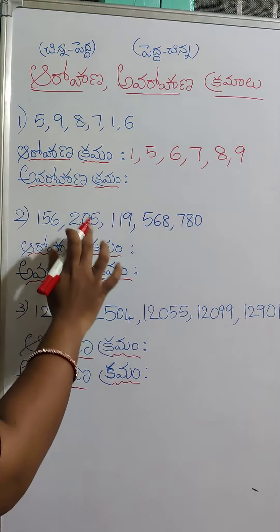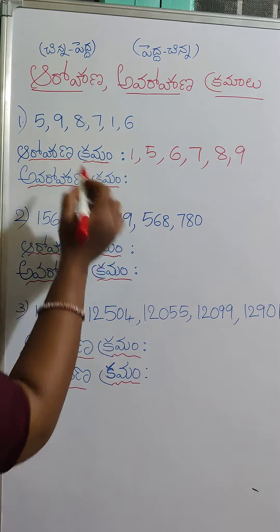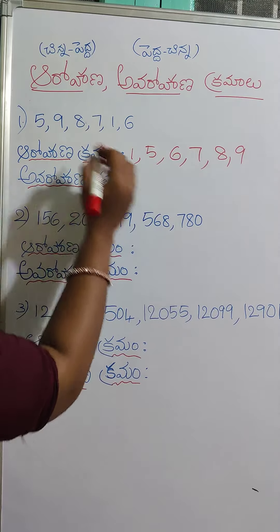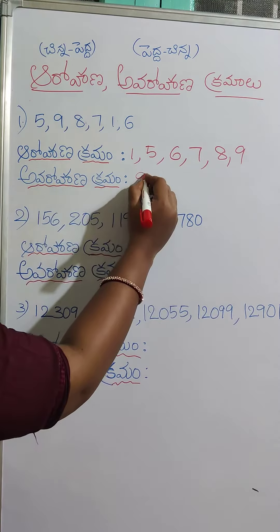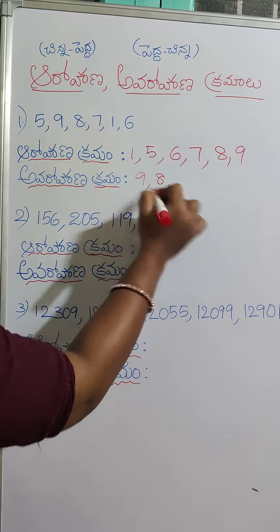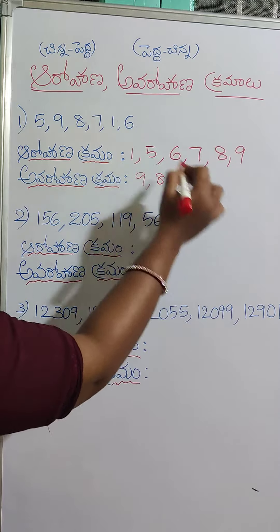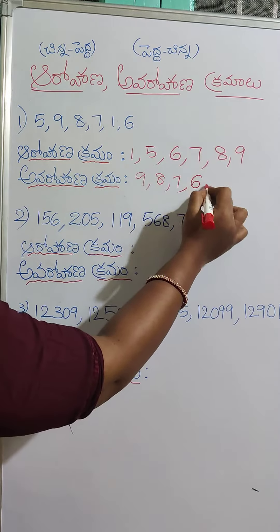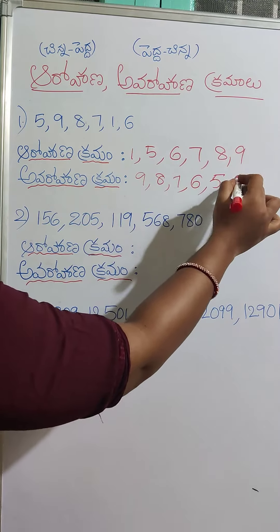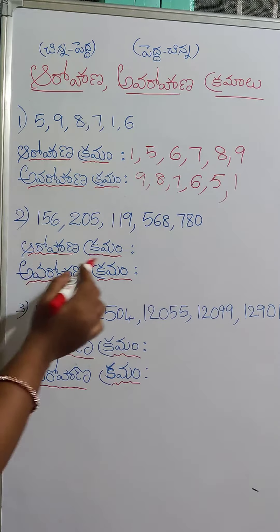Avarohana Kramam is 5-5-5-5. Avarohana Kramam is 5-5-5. Next: 8, next 7, next 6, 5, 1.